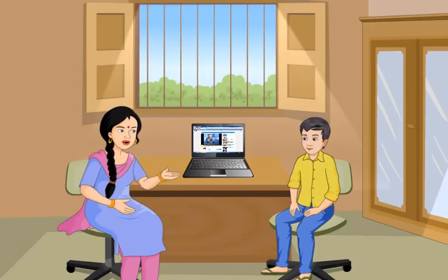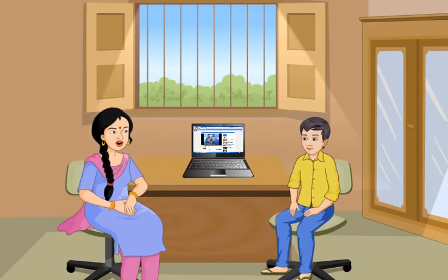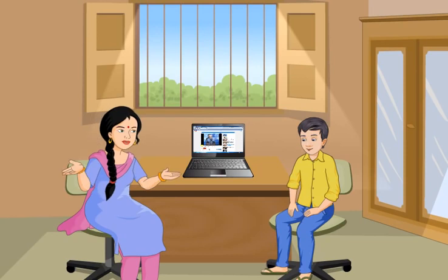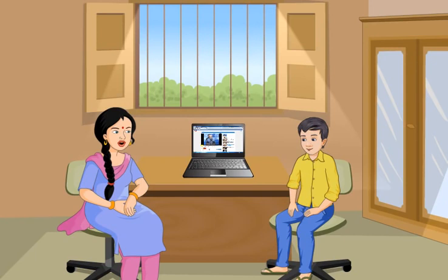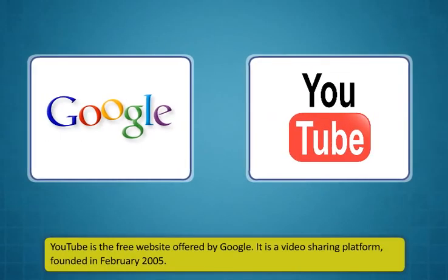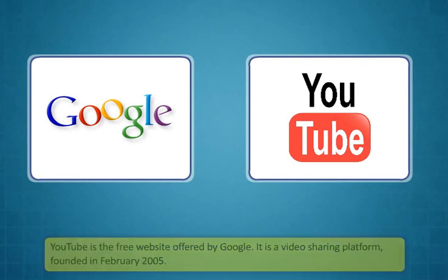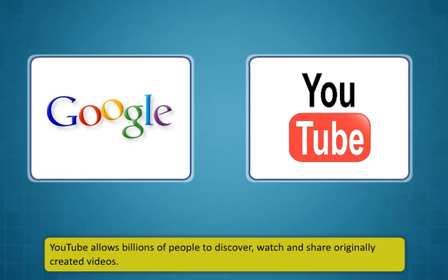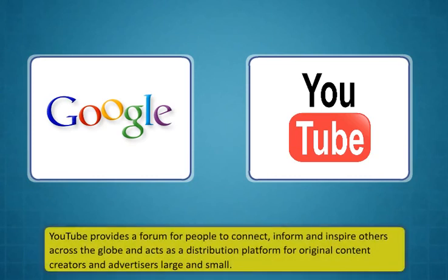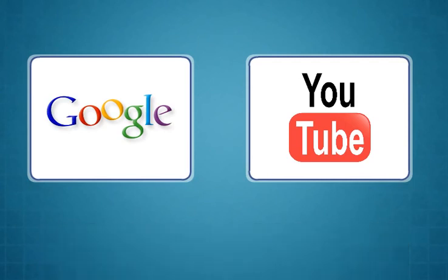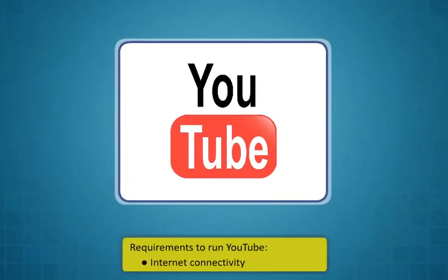There are also websites that offer a lot of information you can use. YouTube and Wikipedia are two popular websites through which you can share or get information. YouTube is a free video-sharing platform offered by Google, founded in February 2005. It allows billions of people to discover, watch, and share originally created videos. To run YouTube, you need internet connectivity, Adobe Flash Player, and a speaker. Open Internet Explorer, type www.youtube.com in the address bar, and press Enter.